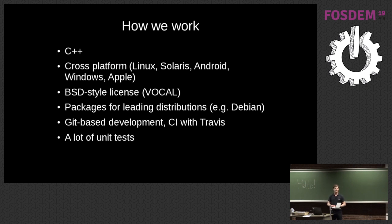We use Git, and at the moment we're using GitHub. We also use Travis CI to run continuous integration tests. We have lots of unit tests — that's a big part of our methodology. When we change something, we often add new unit tests both to test what we've done and to make sure that feature doesn't break in the future if someone changes it again.